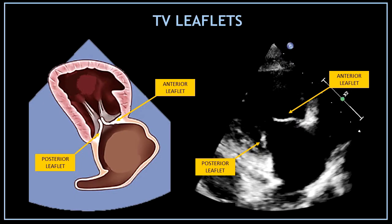In the middle of the view between those two chambers we can find the tricuspid valve. In this view we can visualize two different tricuspid valve leaflets. On the right hand side you can visualize the anterior leaflet of the tricuspid valve, and on the left hand side you can see the posterior leaflet of the tricuspid valve.